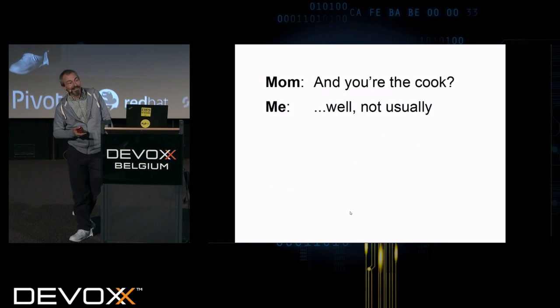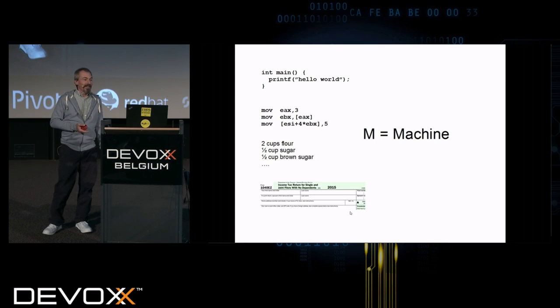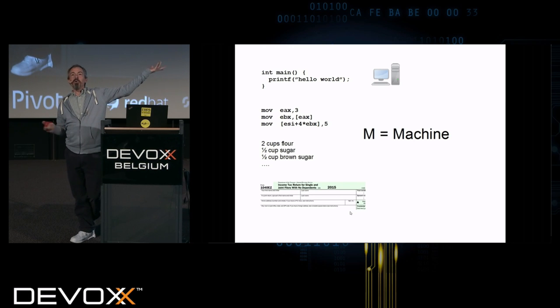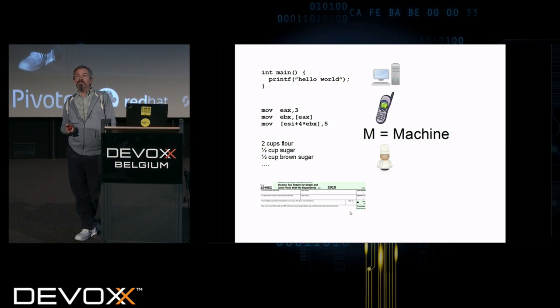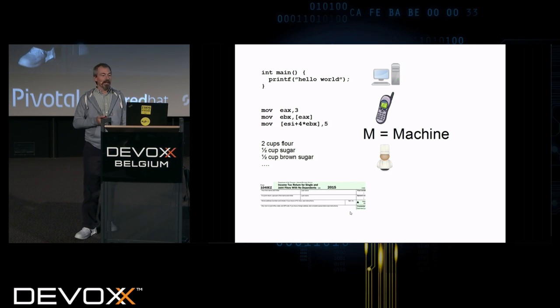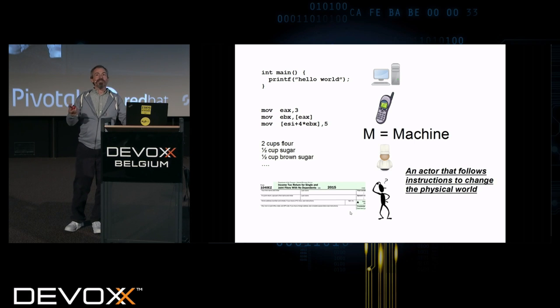And you're the cook? Well, not usually. Usually there's some machine. And what do I mean by machine? Well, in the first example we all know, it's a computer, right? Your desktop or whatever. Maybe it's an embedded device, maybe it's in my pacemaker. Maybe it's my car, lots in cars. Maybe it is a person. Maybe it's the chef following this recipe. It's an actor that follows instructions to change the physical world. It's a doer, an activity.